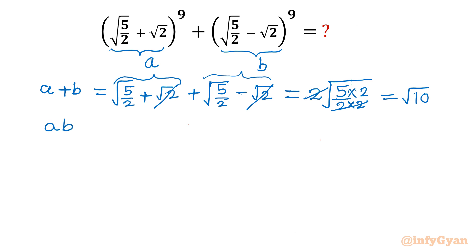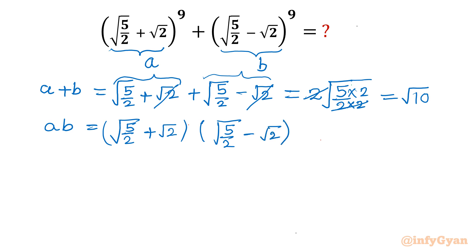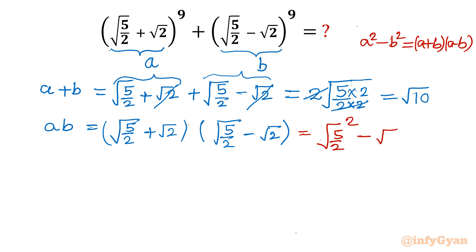Now for the product a × b: we write [√(5/2) + √2] × [√(5/2) − √2], which is a difference of two squares, a² − b². Applying the formula: (√(5/2))² − (√2)² = 5/2 − 2 = 0.5, so a × b = 1/2.